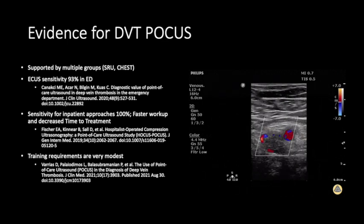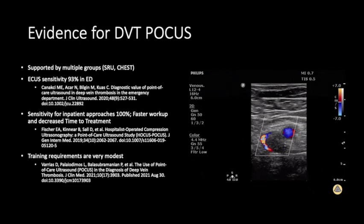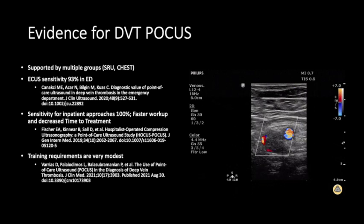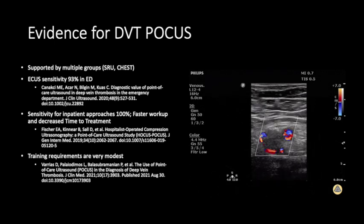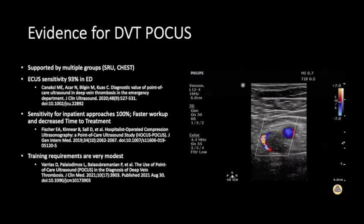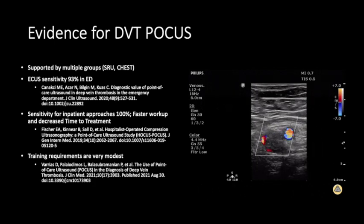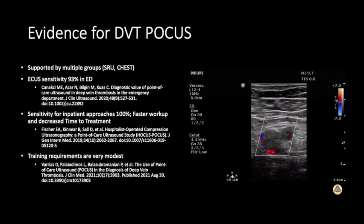Let's end this module with a review of the evidence supporting point-of-care ultrasound for DVT detection. Organizations such as CHEST and the Society of Radiologists in Ultrasound have put out statements in support of POCUS for diagnosing DVT, largely because multiple studies have shown high sensitivities and specificities above 90 percent each, in both the emergency room and inpatient settings. While fewer studies have been conducted in the ambulatory outpatient setting, those that have seem consistent with these results. Patient-centered outcomes linked to POCUS use include decreased ER length of stay, increased patient satisfaction, decreased time to initiation of treatment, and lower costs. Additionally, studies have shown that medical residents, advanced practice providers, and even inexperienced POCUS users can quickly attain sufficient training with little time investment and consistently reach high levels of confidence in their exam findings after just a handful of real or simulated patient encounters.